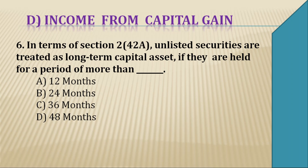Question 6: In terms of section 2(42A), unlisted securities are treated as a long-term capital asset if they are held for a period of more than ____ months. Options are 12 months, 24 months, 36 months, or 48 months. For unlisted shares and securities, the period given is 24 months. So the right answer is B — 24 months.